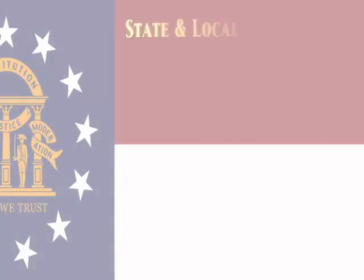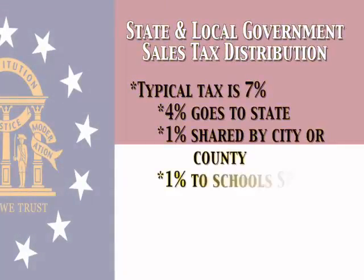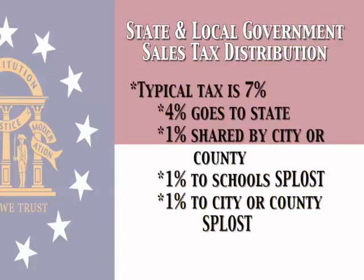Four percent will go to the state. One percent will be shared by the city or county. One percent will go to the school SPLOST — a special purpose local option sales tax for the area. And one percent will go to a city or county SPLOST, or special purpose local option sales tax. These funds are then used to generate services that are very close to state and local residents.